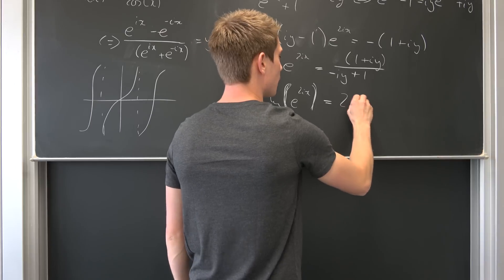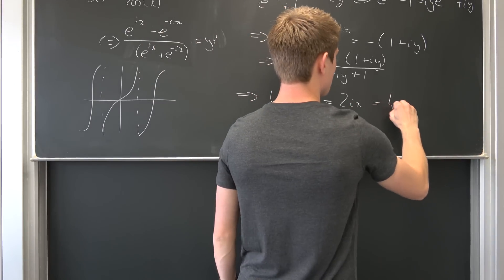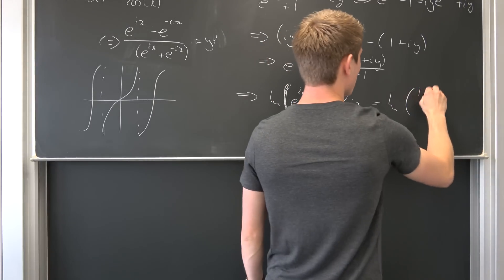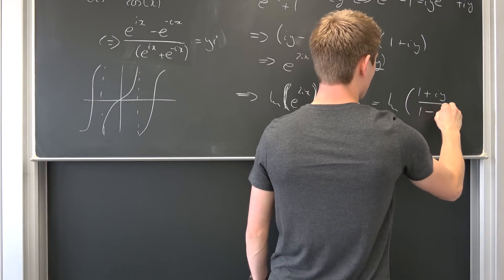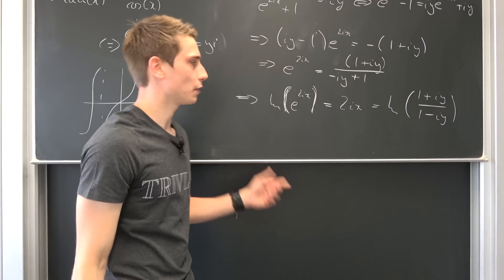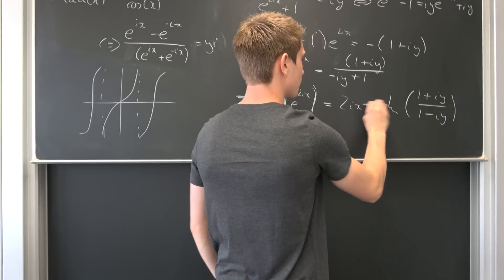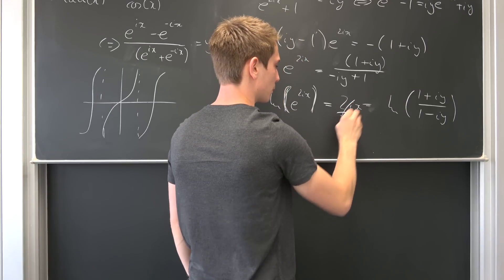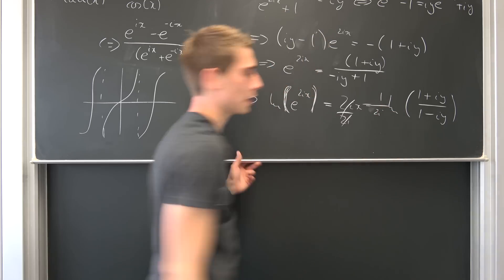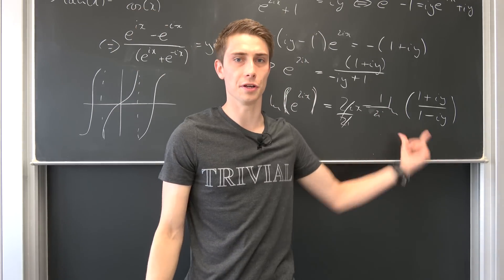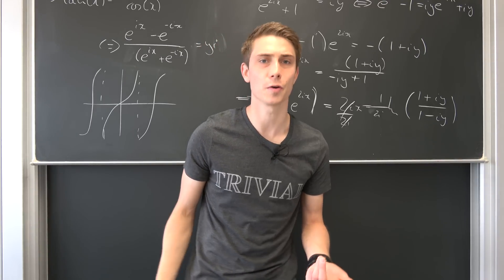Now we can divide both sides by 2i. The left side cancels to just x. We get 1/(2i) times the natural log of (1 + i·y) / (1 − i·y), and this right here is exactly our inverse tangent. We have derived the basic formula and can now work with it.